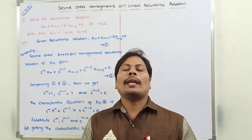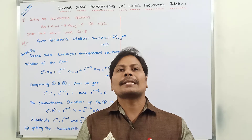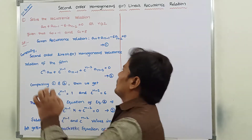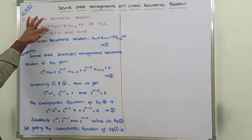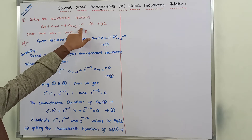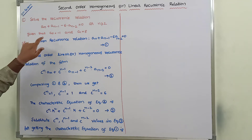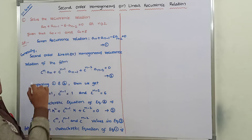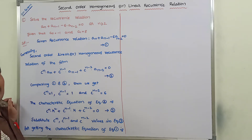Hi friends, today I am giving a lecture on an example problem on second order linear homogeneous recurrence relation. The given problem is: solve the recurrence relation a_n + a_(n-1) - 6·a_(n-2) = 0, for n ≥ 2, given that a₀ = -1 and a₁ = 8. Here, two initial conditions are given, hence we can say that it is a second order linear recurrence relation.